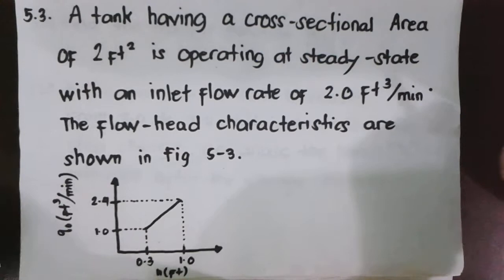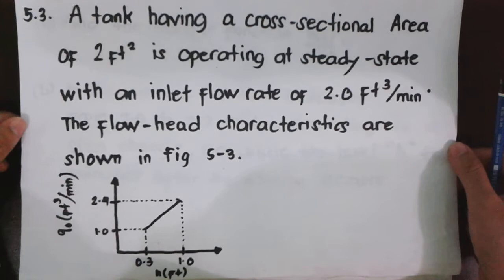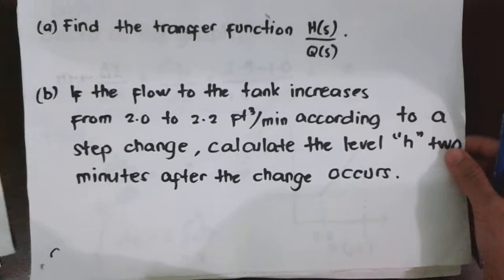And the problem goes this way. A tank having a cross-sectional area of 2 feet square is operating at steady state with an inlet flow rate of 2.0 cubic feet per minute. The flow head characteristics are shown in this figure.